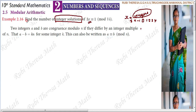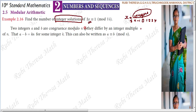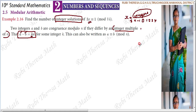Two integers a and b are congruent modulo n if they differ by an integer multiple of n. The difference of these two integers, a minus b, should be an integer multiple of n — that is, multiplied by k.